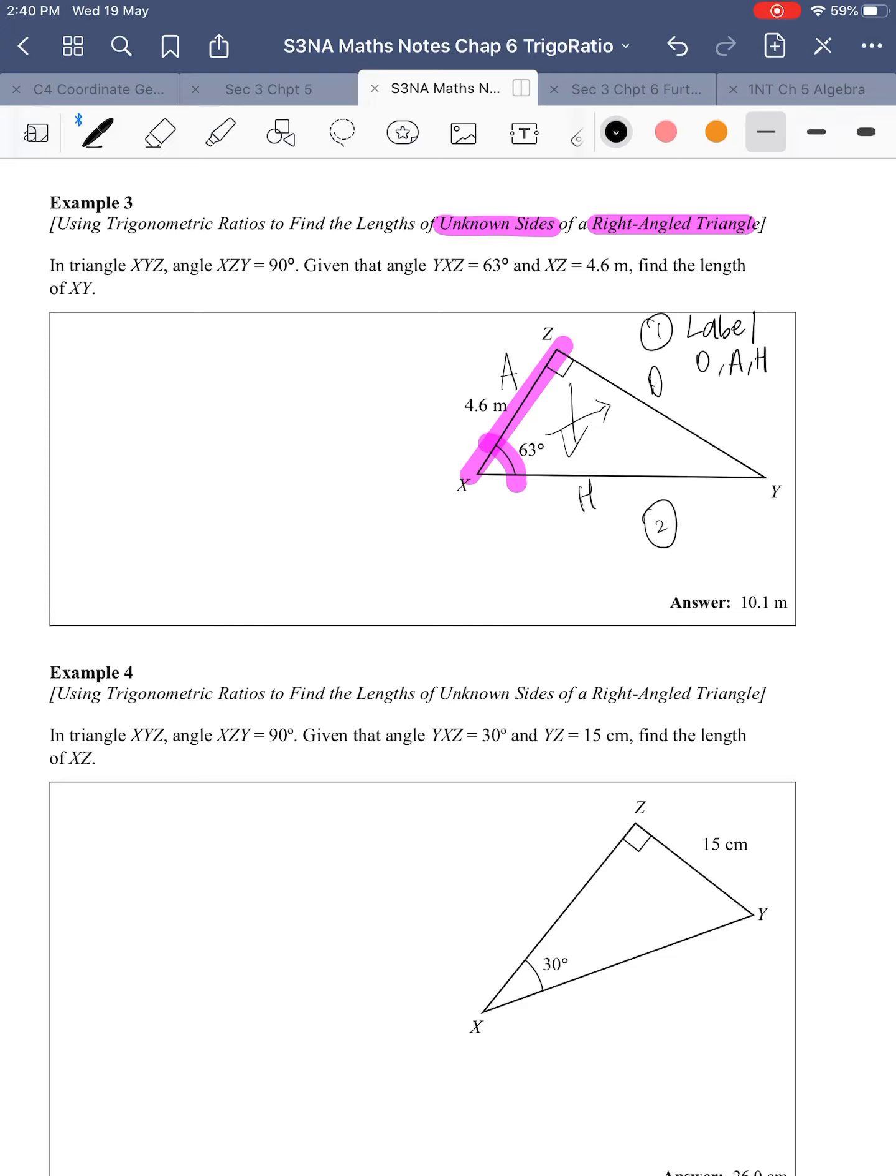Next thing I have to ask myself: what I have, what I want to find. That would help me determine whether to use TOA, CAH, or SOH. If you're hearing a bird in the background, that's my father's bird. So XY is what I want to find, and XZ is what I have. So A and H, TOA, CAH, so I will use cosine. Cosine of the given angle, CAH, A over H, which is 4.6 over hypotenuse XY.